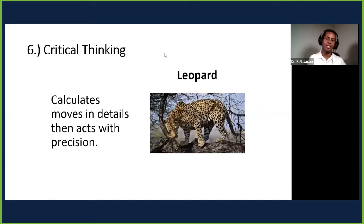Number six: critical thinkers, using the leopard. The leopard stays on the tree, waits patiently for the prey, studies the movements closely, and then pounces suddenly with precision, very quickly with no warning. Critical thinkers calculate moves in detail then act with precision. They surprise you—they've just graduated with their masters and you never heard when they went to school.